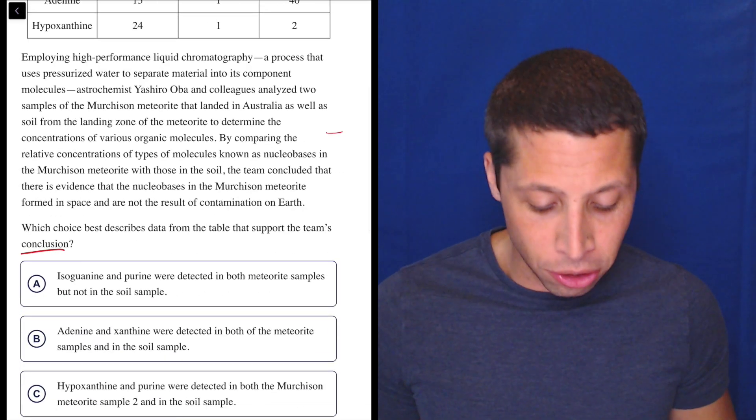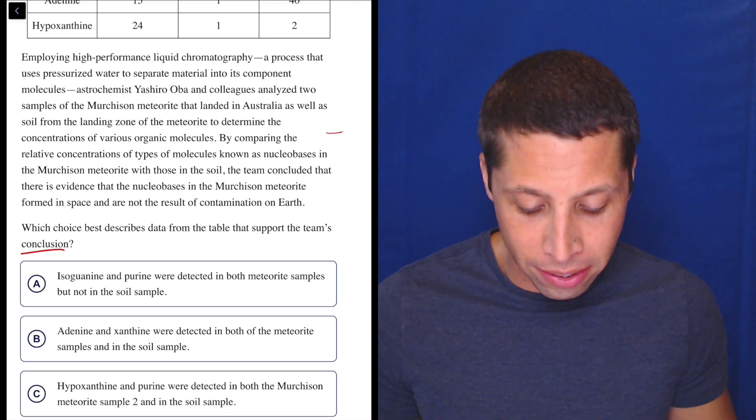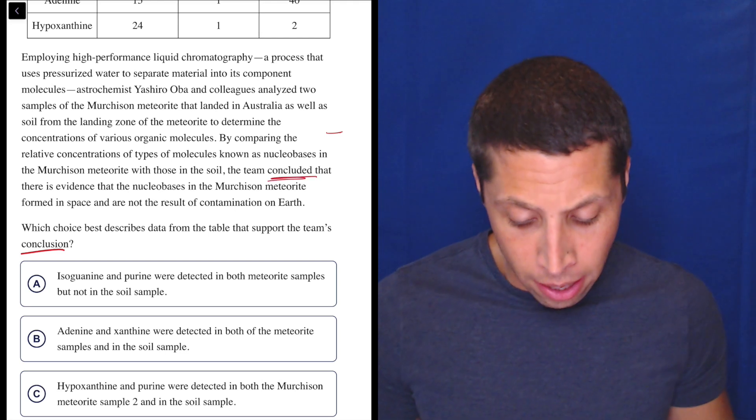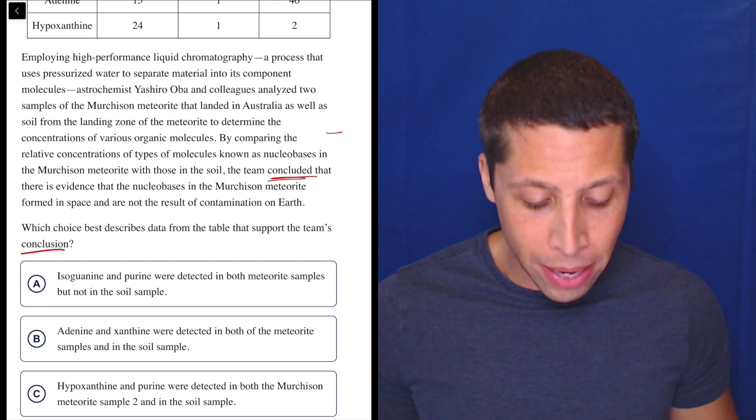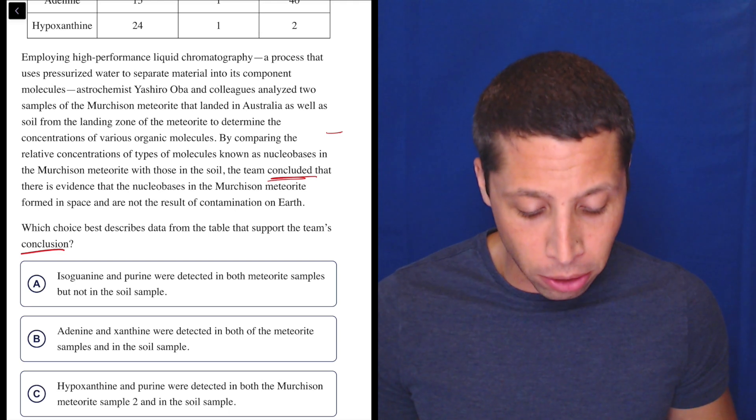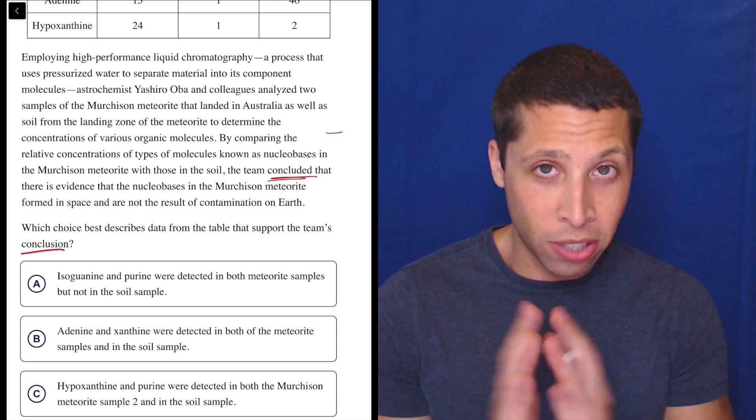By comparing the relative concentrations of types of molecules known as nucleobases in the Murchison meteorite with those in the soil, the team concluded that there is evidence that the nucleobases in the Murchison meteorite formed in space and are not the result of contamination on Earth. Okay, so here's what they're saying.